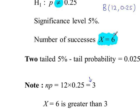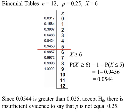If the x value here was less than 3 — for example if x was equal to 2 — then in the tables we would work out P(x ≤ 2). So we're working out P(x ≥ 6). Another point to notice: it's a two-tailed test, so the significance level has to be split. So we're going to work out P(x ≥ 6).